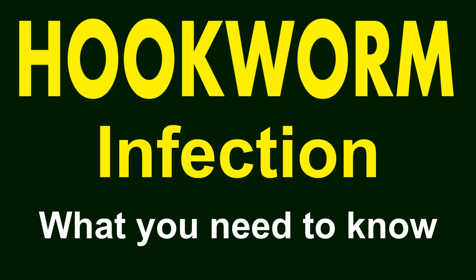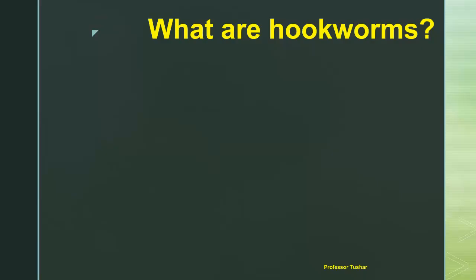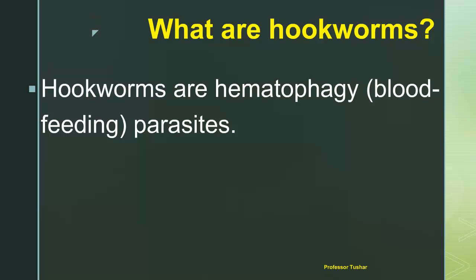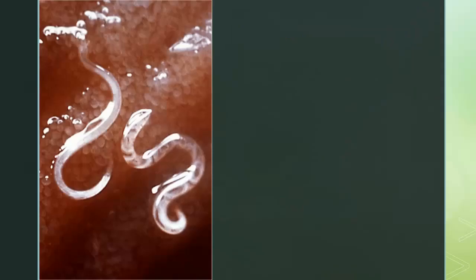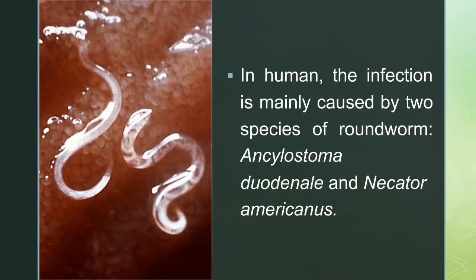Hookworm infection — what you need to know. What are hookworms? Hookworms are hematophagous, blood-feeding parasites. They cause helminthiasis, worm infection, in living animals as well as in humans. In humans, the infection is mainly caused by two species of roundworm: Ancylostoma duodenale and Necator americanus.